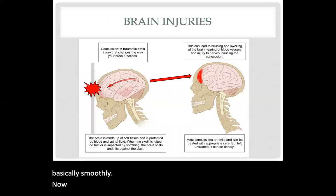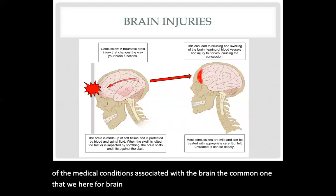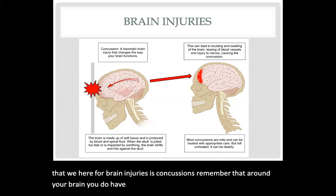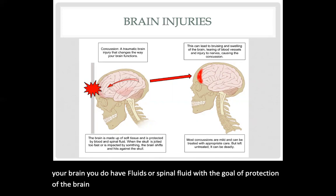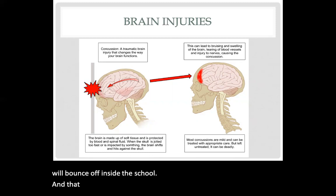The last few slides of this PowerPoint focus on medical conditions associated with the brain. A common one we hear about for brain injuries is concussions. Remember that around your brain you have cerebrospinal fluid, with the goal of protecting the brain. However, if the trauma is severe enough, your brain will bounce off inside the skull, and that can cause bruising of the brain tissue.